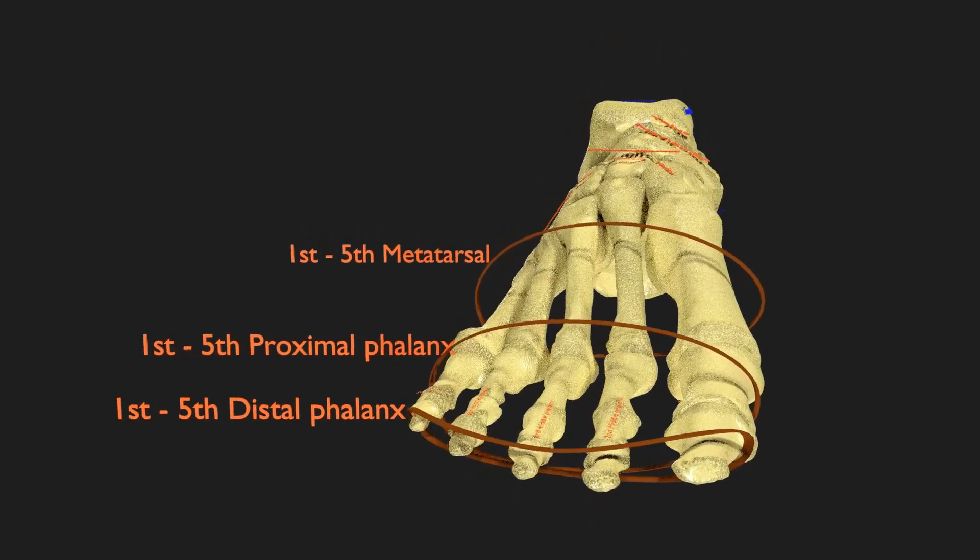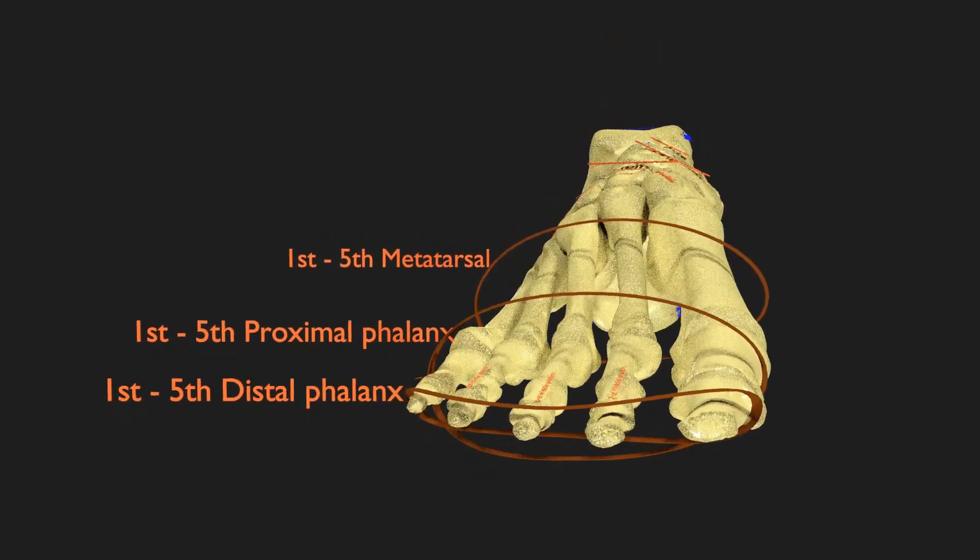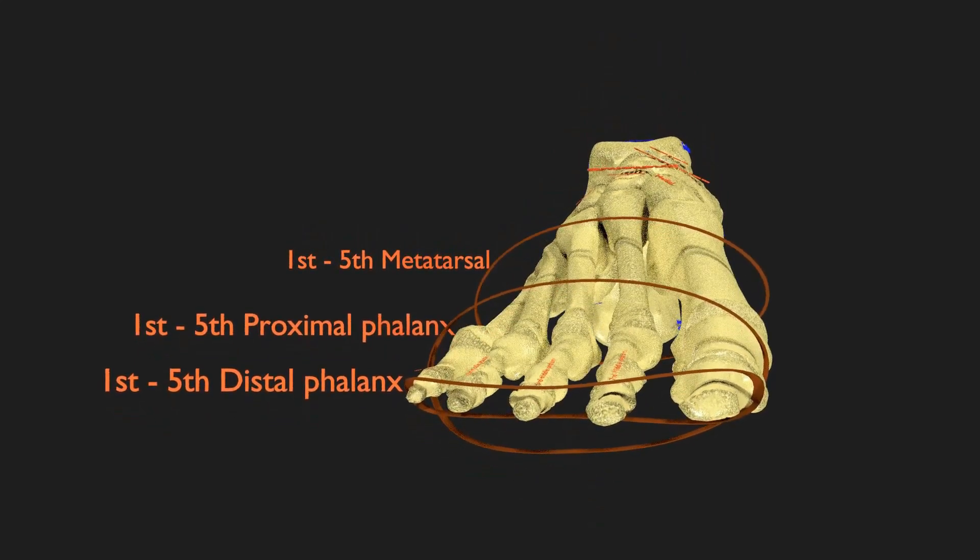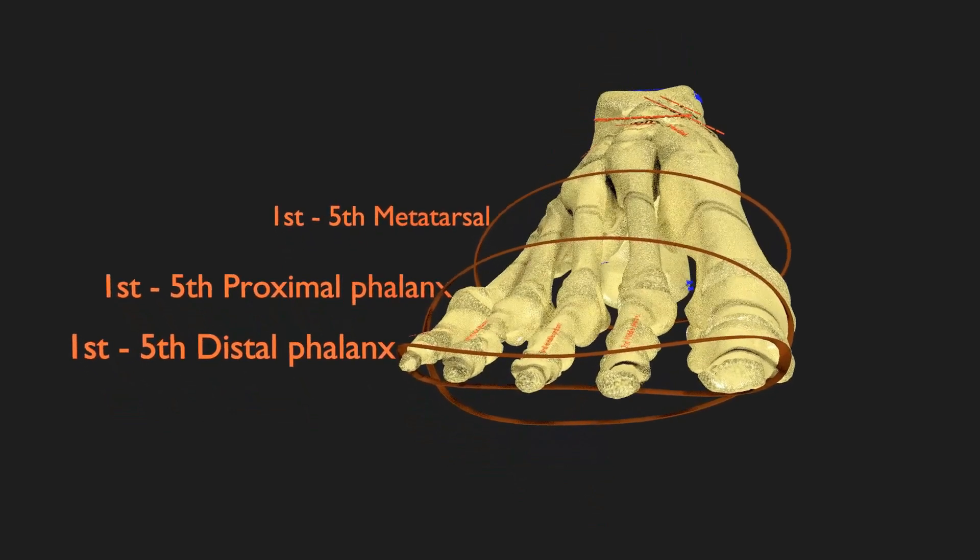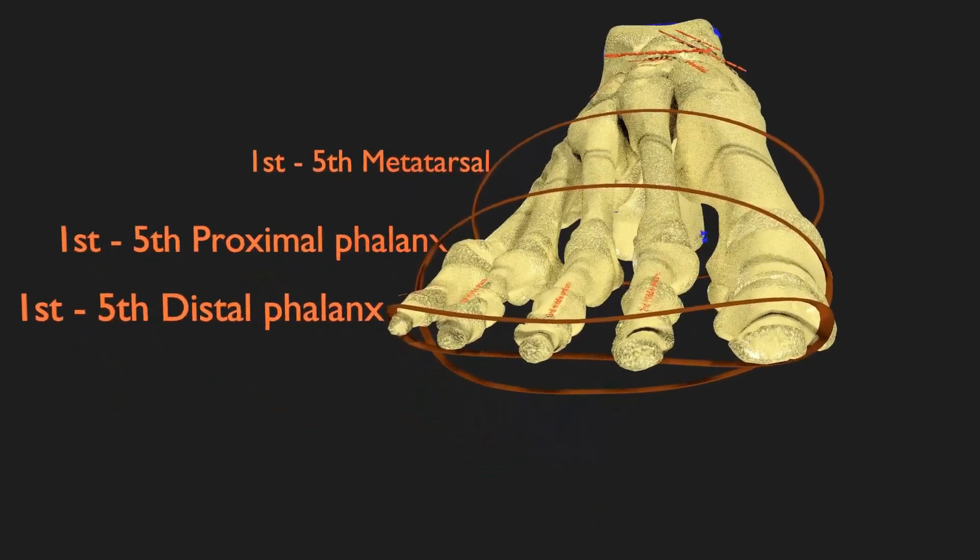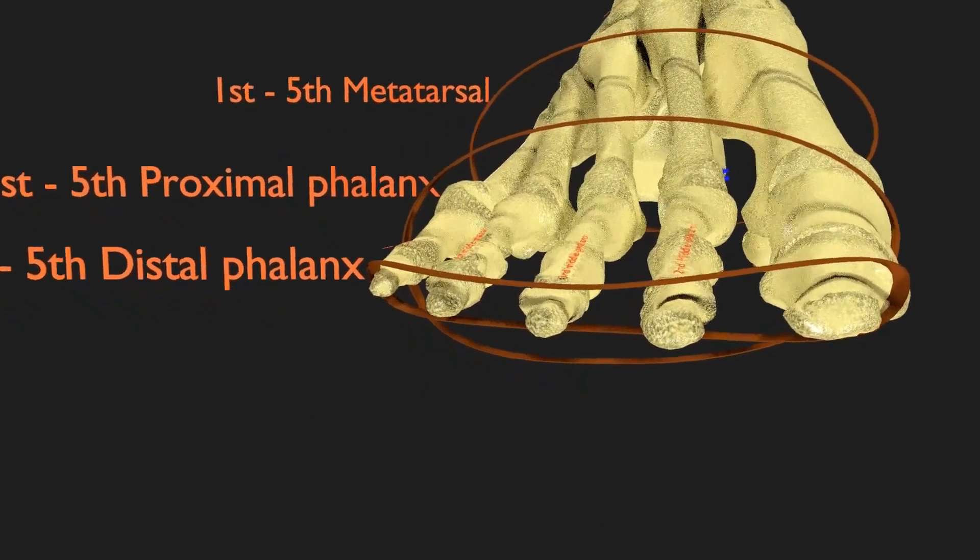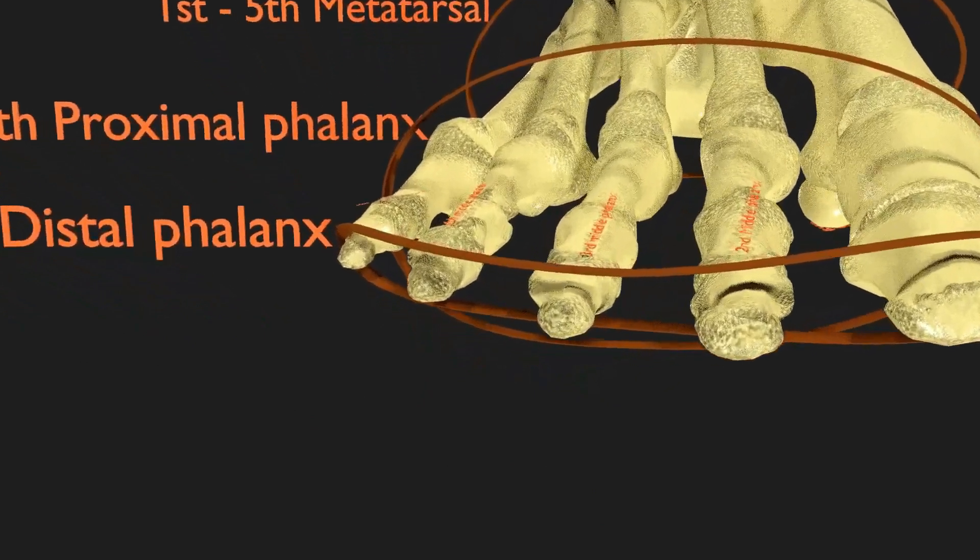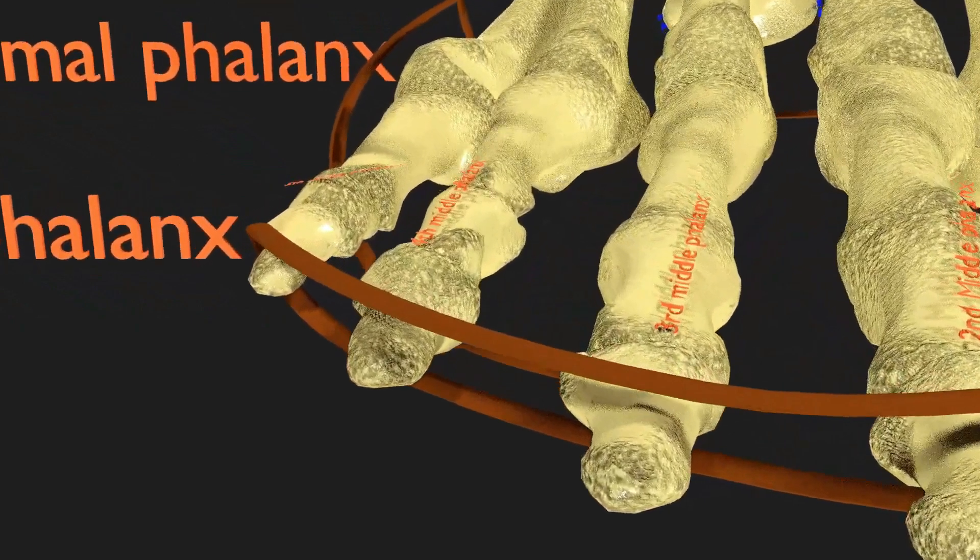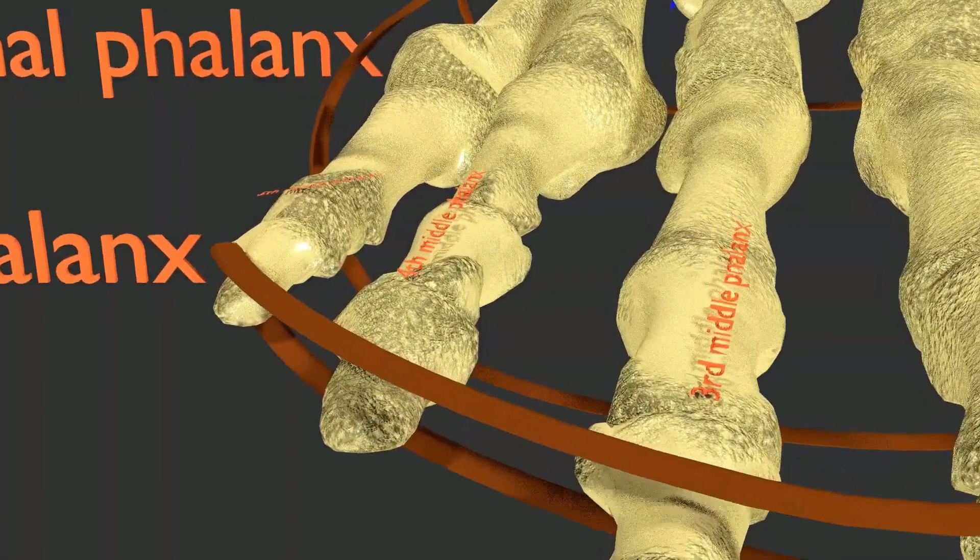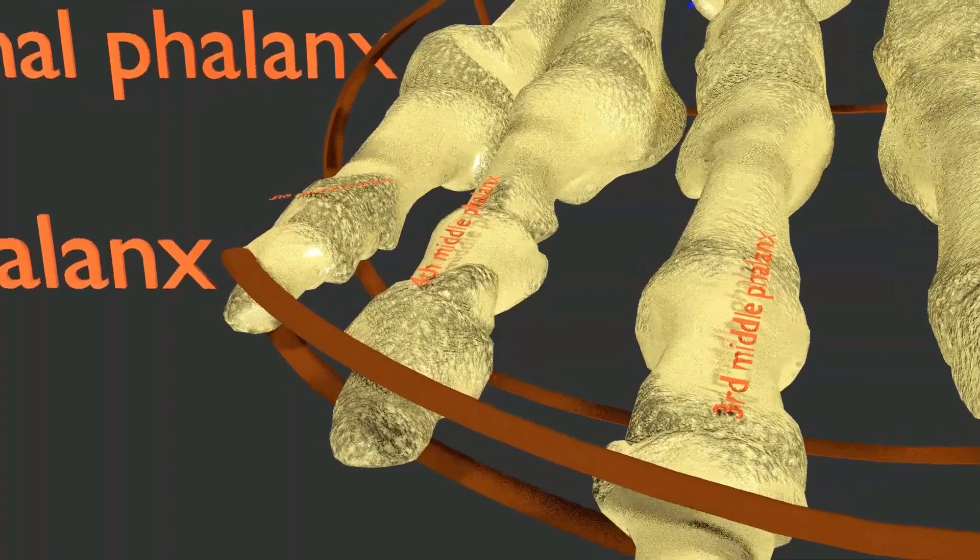This is a video showing anatomy of the skeleton of the right foot. The bone names have been given in orange and their respective parts in blue. To start with, there are a total of 28 bones in the foot which are broadly classified proximally to distally into tarsals, metatarsals, and phalanges.